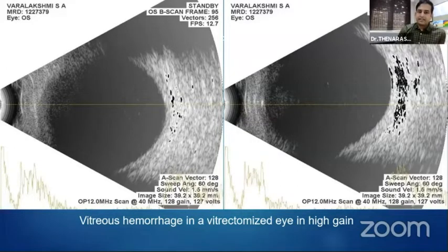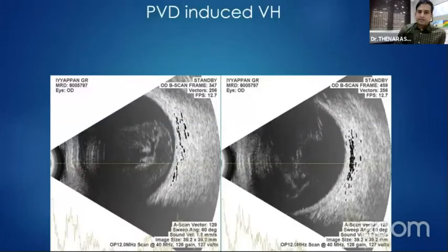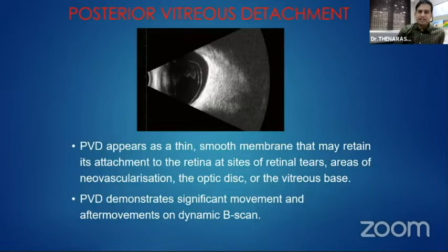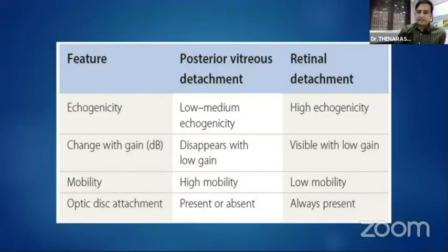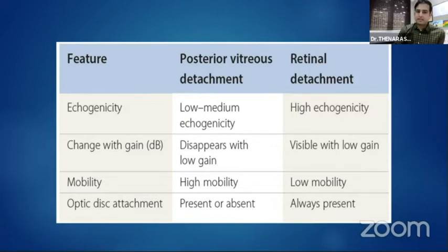In post-vitrectomized eyes with re-bleed, vitreous hemorrhage is very difficult to pick up — only by increasing the gain can we see mild-to-moderate vitreous dot echoes. In PVD-induced vitreous hemorrhage, the first picture shows a complete PVD and the second picture shows incomplete PVD. To differentiate PVD from retinal detachment: in PVD you see a thin line that disappears when you reduce the gain, whereas in retinal detachment the reflectivity persists even after reducing the gain. In retinal detachment, the retina is always attached to the optic disc, whereas in PVD it may or may not be.